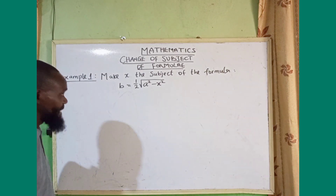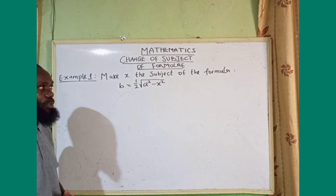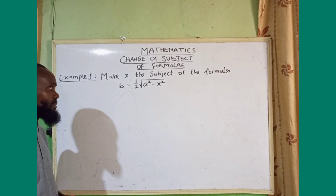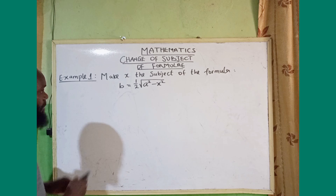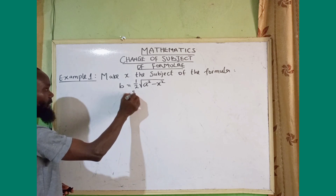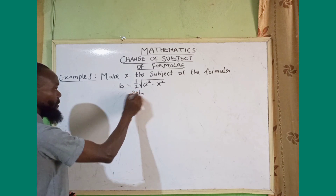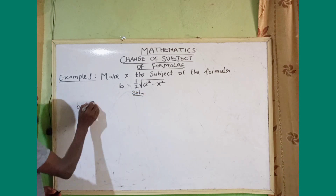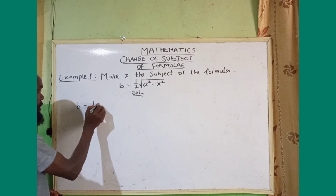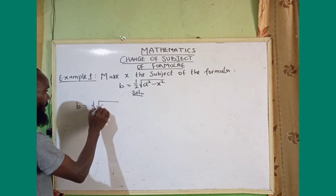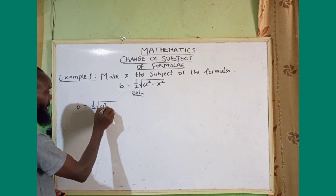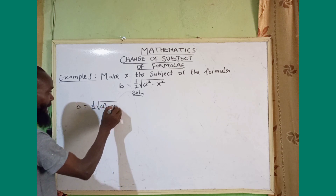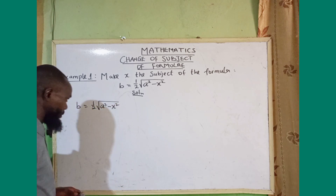We want to make x the subject of the formula. Here is the given formula: b is equal to one over two multiplied by the square root of a squared minus x squared.